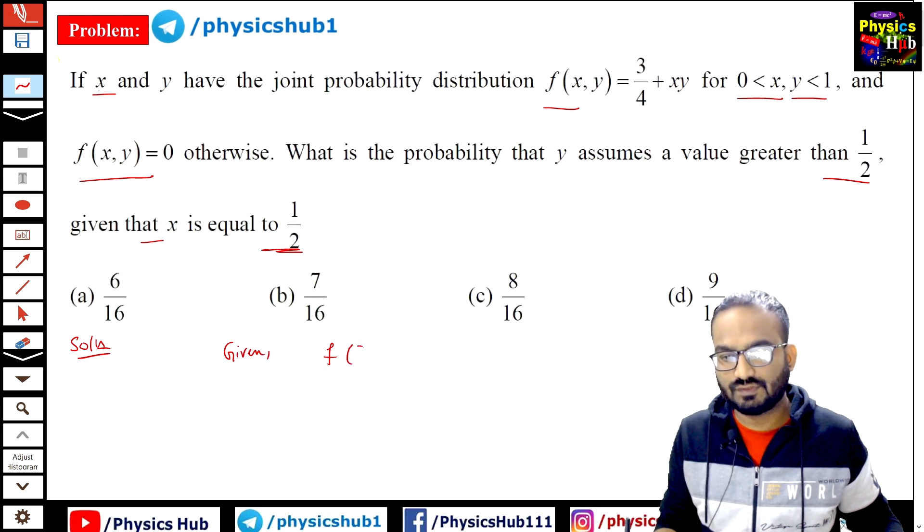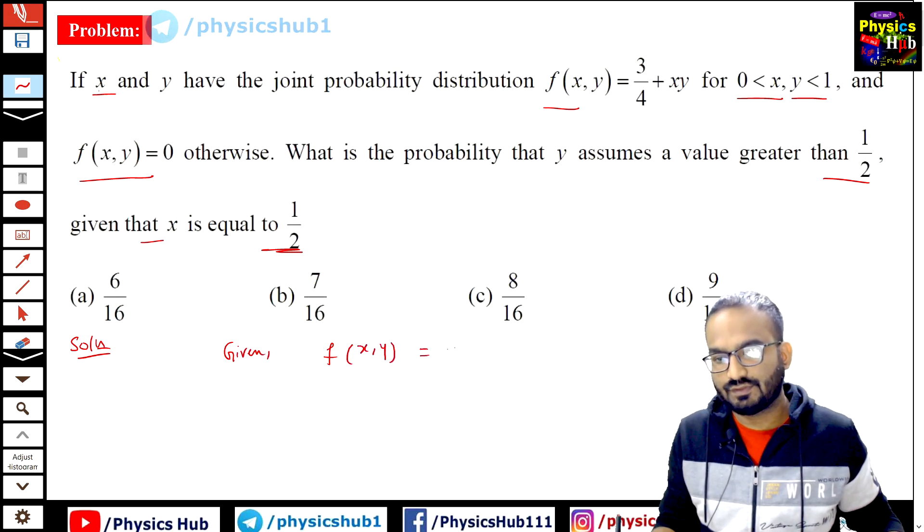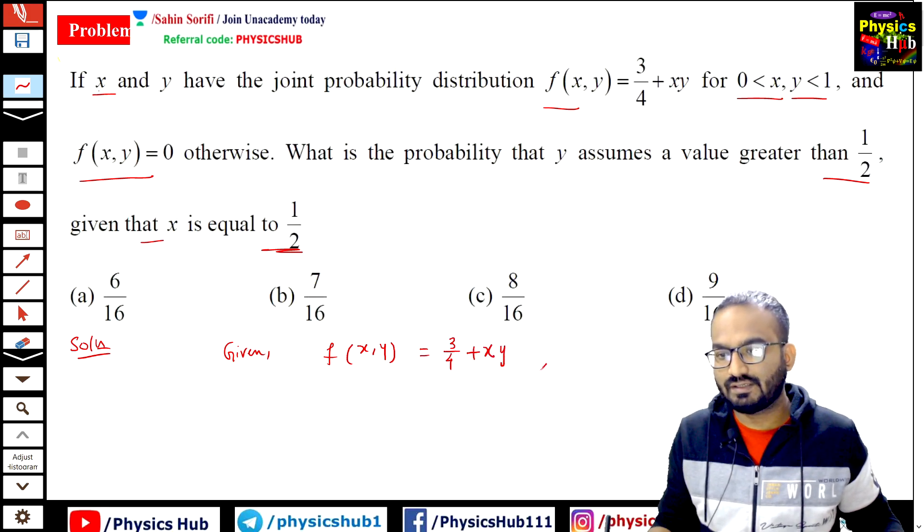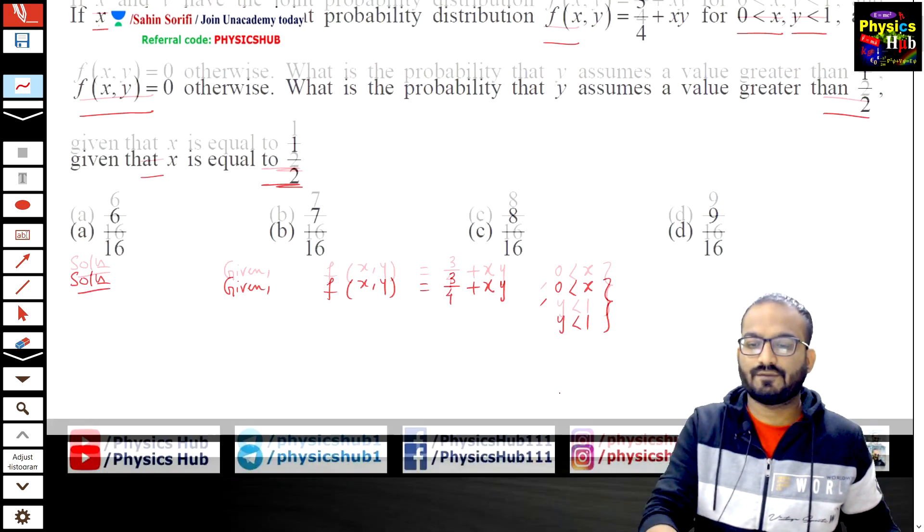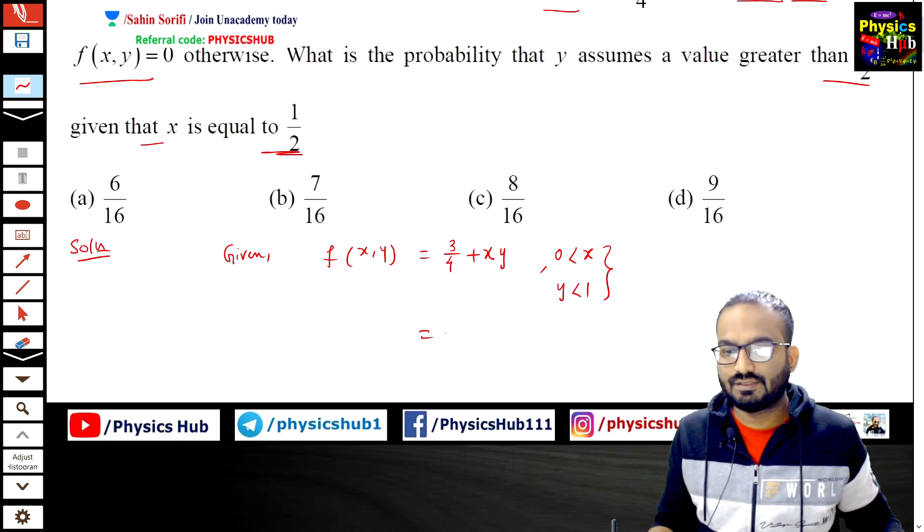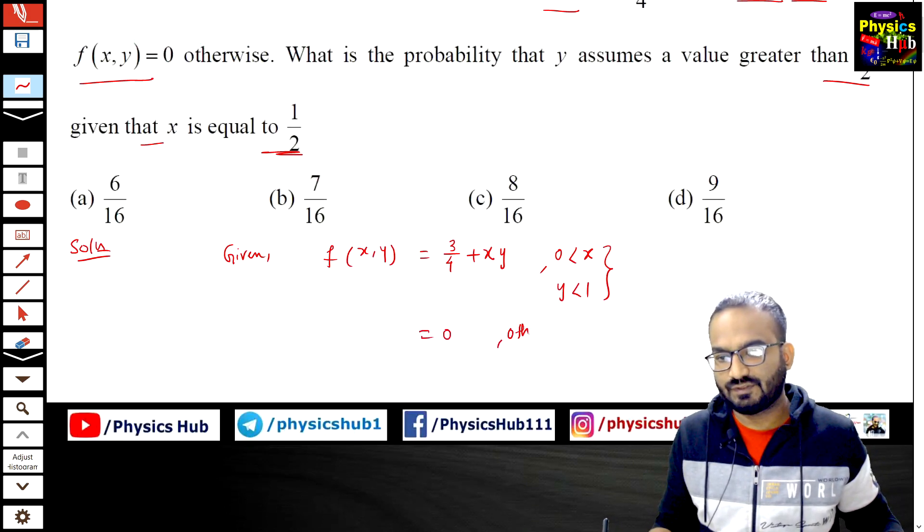f(x,y) equals 3/4 plus xy, and it is given for 0 less than x and y less than 1, and it equals 0 otherwise. This is given to you.